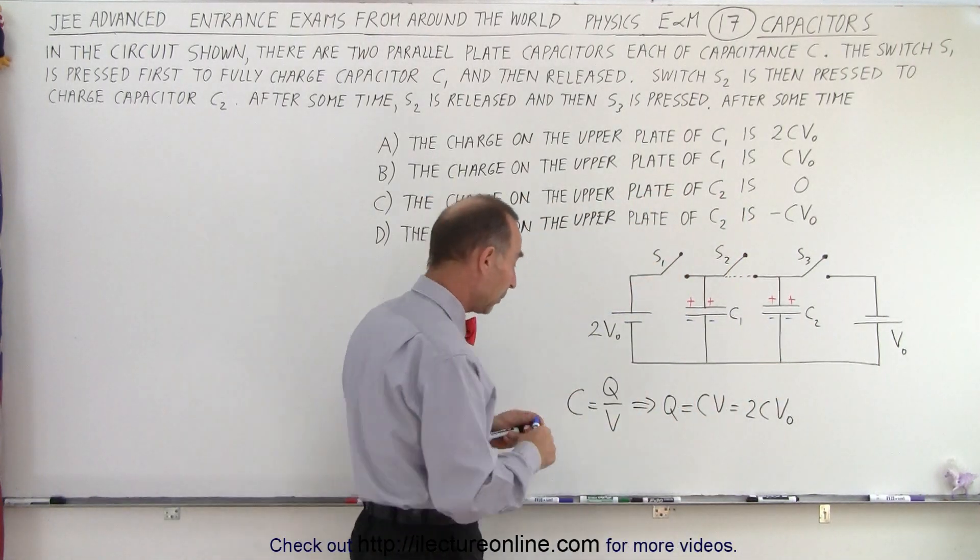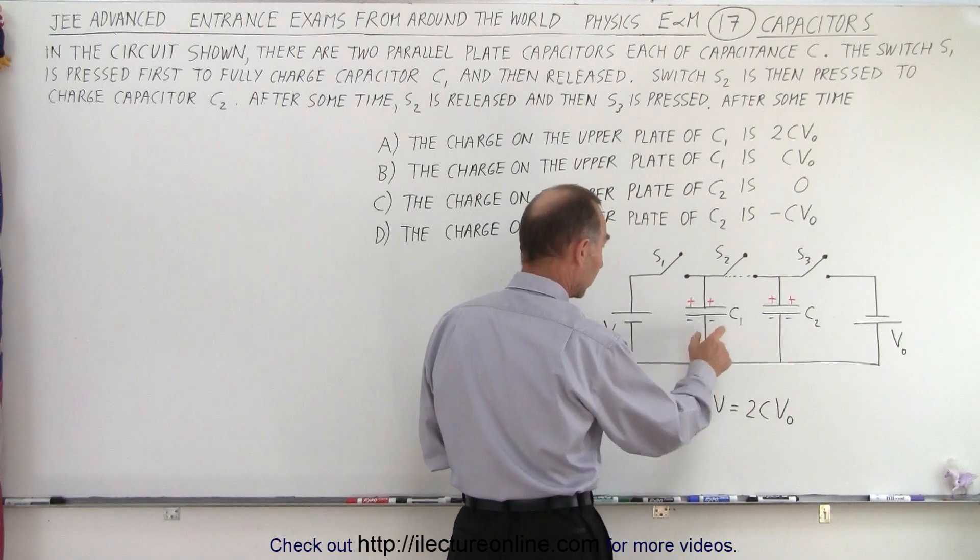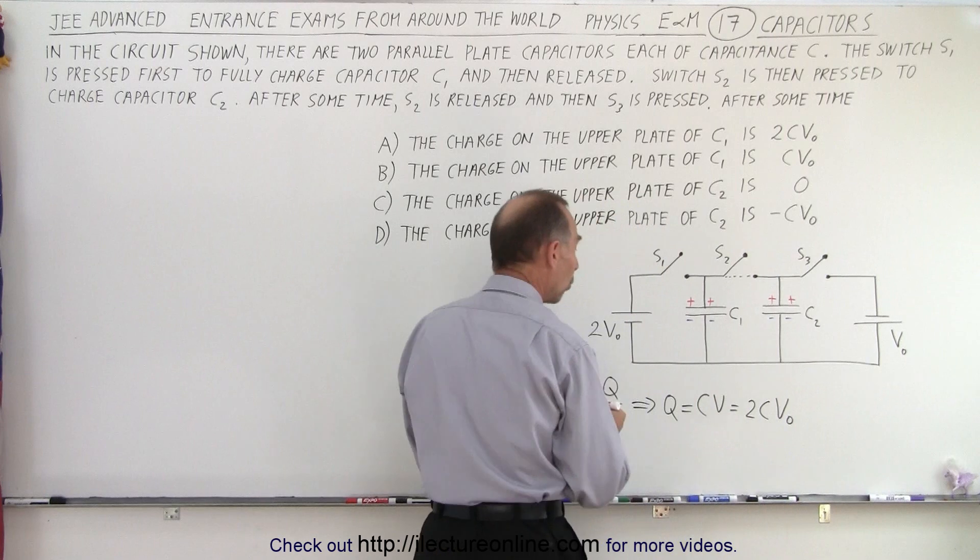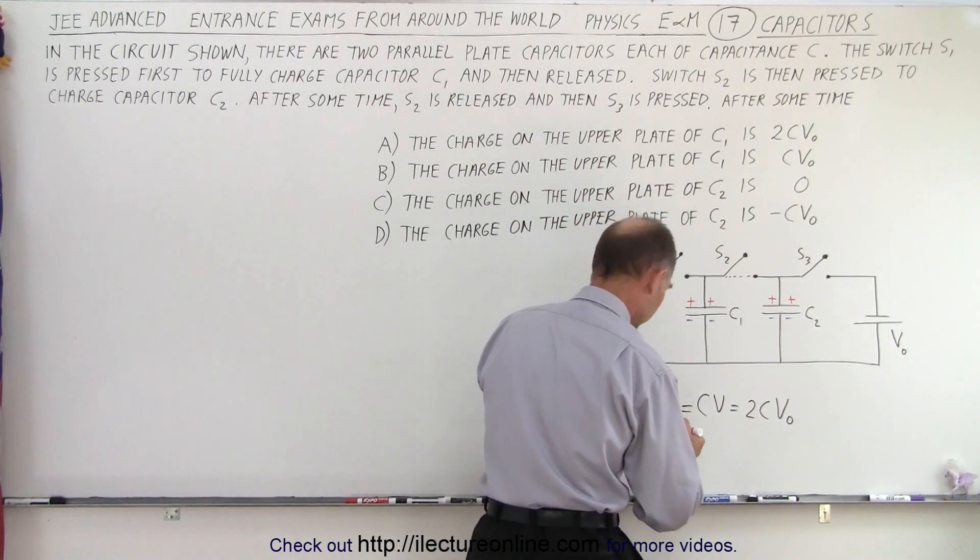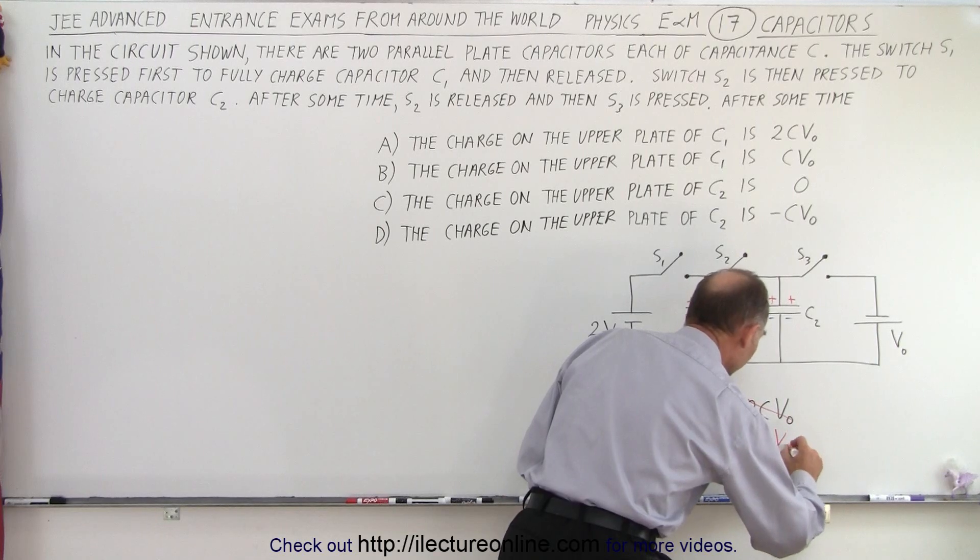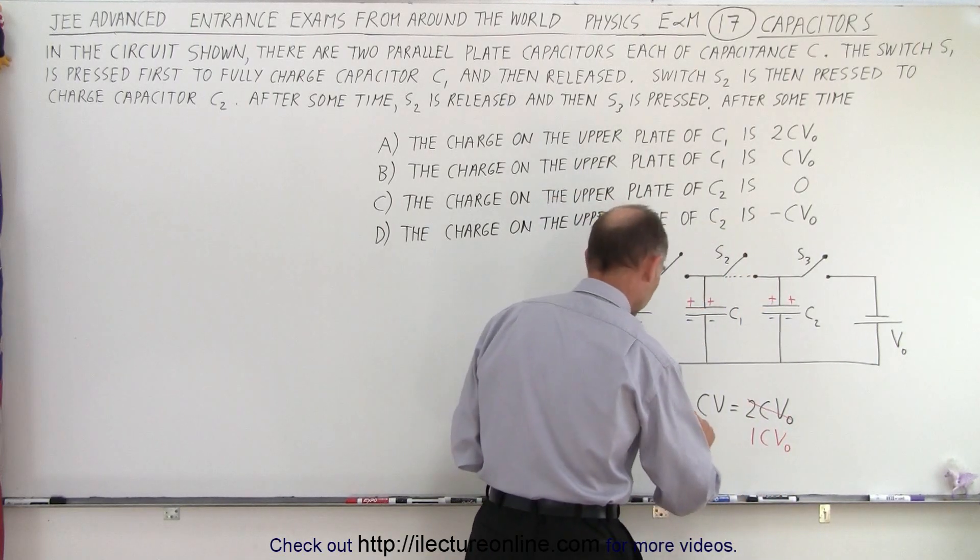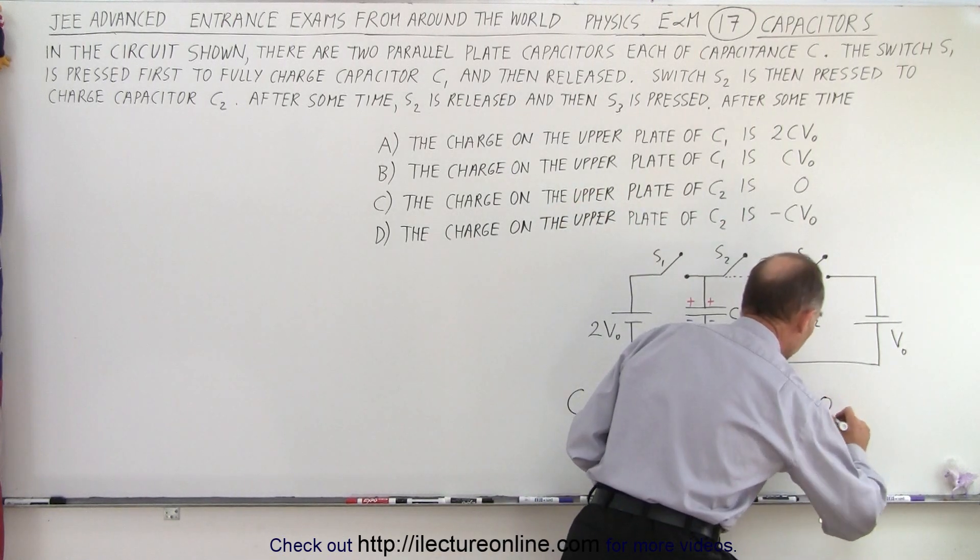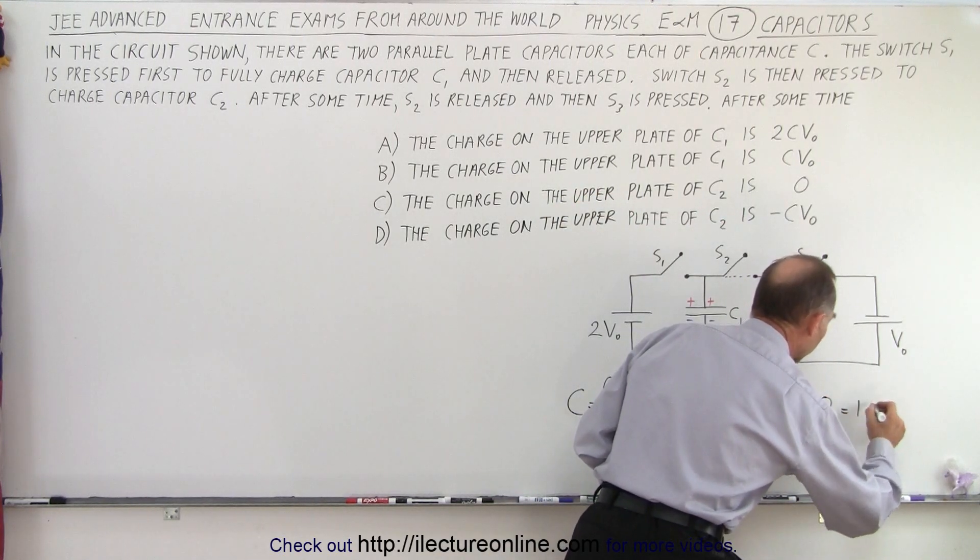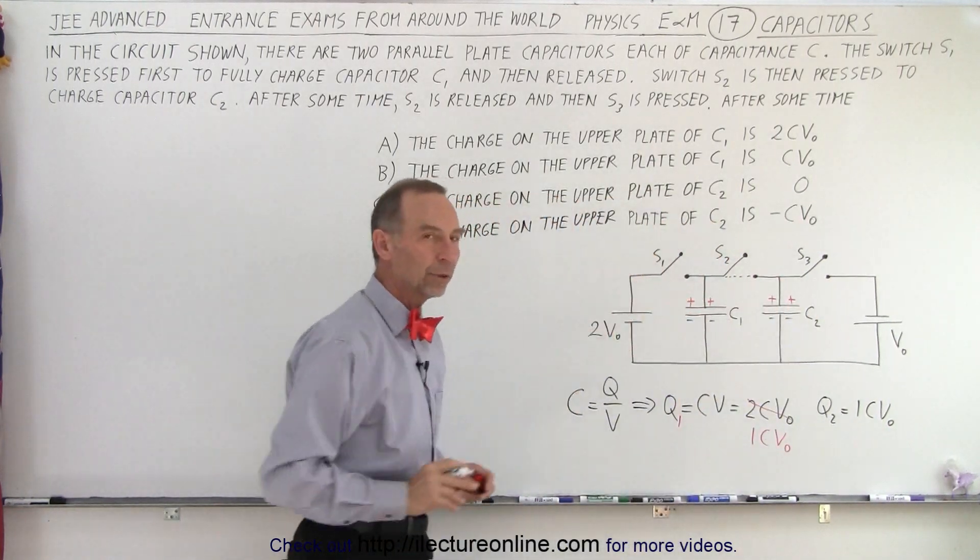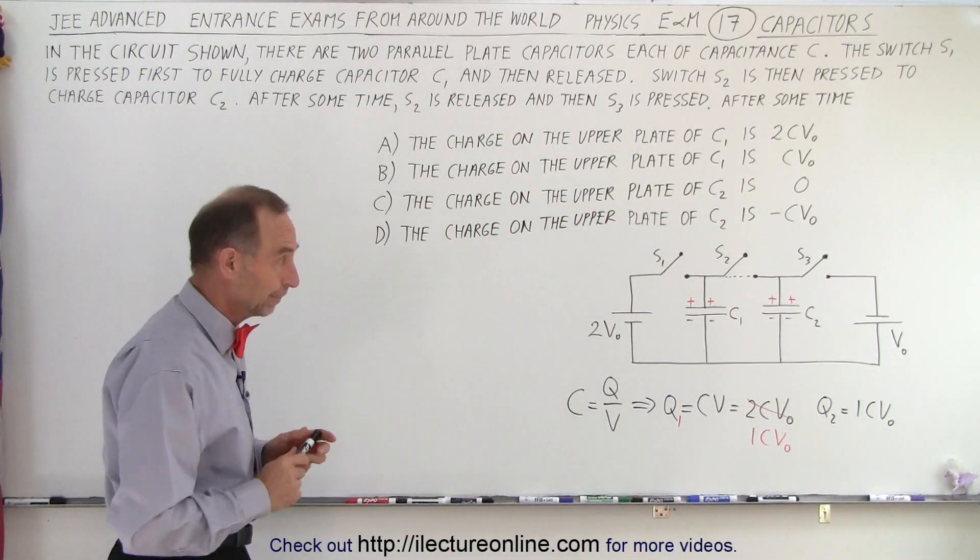So now what happened was that the charge on C1 has now gone from 2CV₀ to 1CV₀. So now at this point this is now being changed to 1CV₀, that's on charge one, and then you can also say that charge two is also 1CV₀. Half of the initial charge that was on here moved on to here, equally divided. But we're still not done because now what happens is switch S2 opens up and now S3 closes.